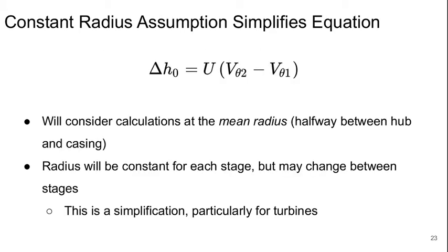If we make a constant radius assumption, we can simplify this equation significantly. We'll consider our calculations at the mean radius, which is essentially halfway between the hub and casing. And we'll assume that that mean radius will be constant for each stage, but it can change between stages. This is actually a pretty big simplification, especially in turbines, but it's one that makes our lives a lot easier. If we do this, then we pull the u, there's no more u1 and u2, u is just a number, r times the angular velocity, and we can pull that out as a parenthesis.